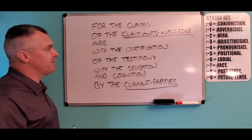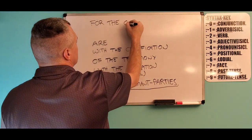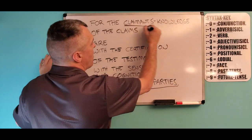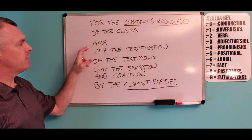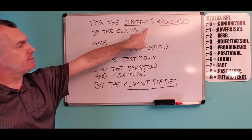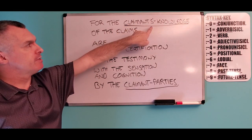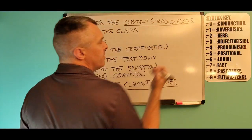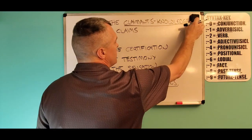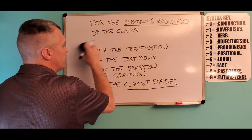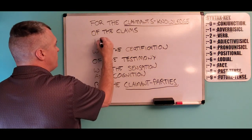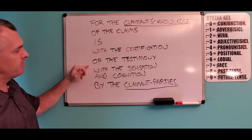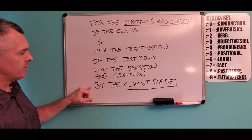Here's another interesting thing. Now we have 'for the claimant's knowledge of the claims are.' Claimants' knowledge — now we have the plural claimants possessing knowledge. This is singular — it's not 'knowledge as,' it's 'knowledge.' It's a singular condition of state. Therefore the verb would be 'is.' The claimant's knowledge of the claimant is, with the certification of the testimony, with the sensation and cognition, by the claimant parties.